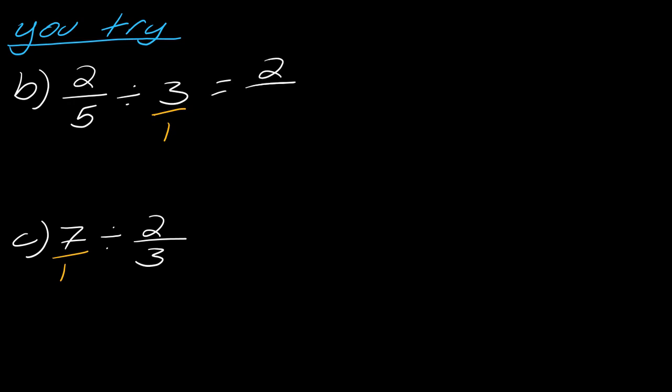So, for B here, I will take 2 fifths and I will flip this now to 1 third. So, now it's like this. 2 times 1 is 2. 5 times 3 is 15. So, we're good to go there.